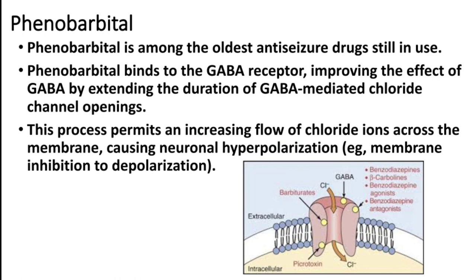Phenobarbitone is one of the oldest anti-seizure drugs still in use. It binds to the GABA receptor, improving the effect of GABA by extending the duration of GABA-mediated chloride channel opening. This process permits an increased flow of chloride ions across the membrane, causing neuronal hyperpolarization.